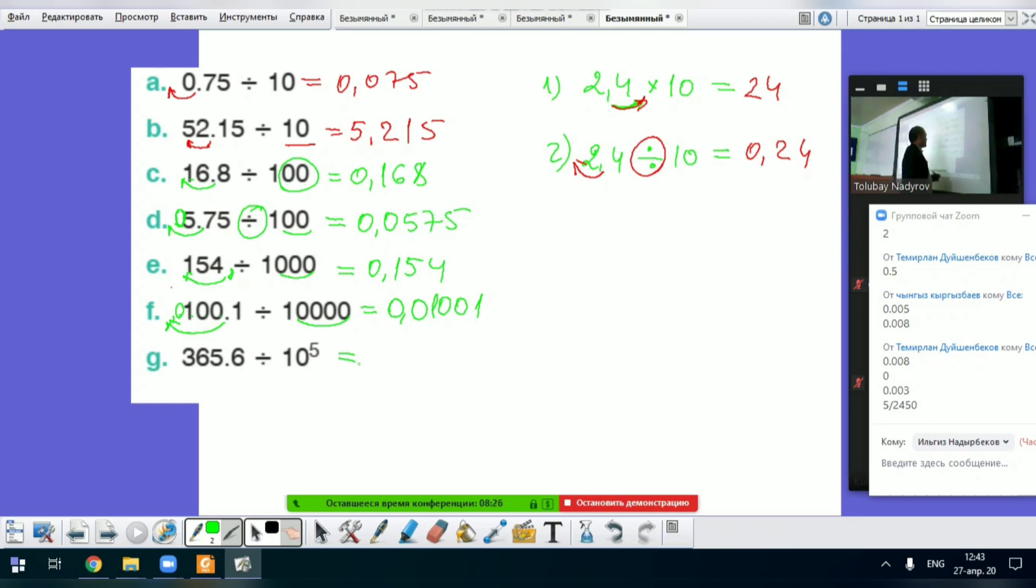And look at the last one. 10 to the power of five. I can write point zero. Yes. After the one, there are five zeros, okay? Five zeros. And our decimal point moves five places to the right side, okay? So we add here one zero and one zero. So it's equal to 0.003656.